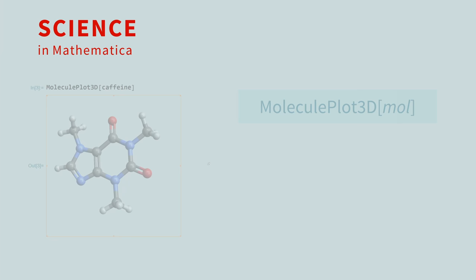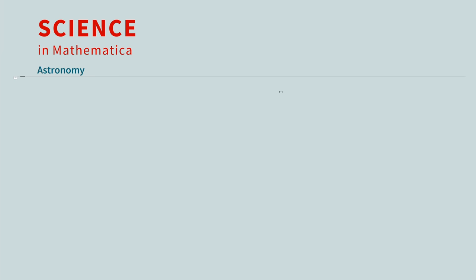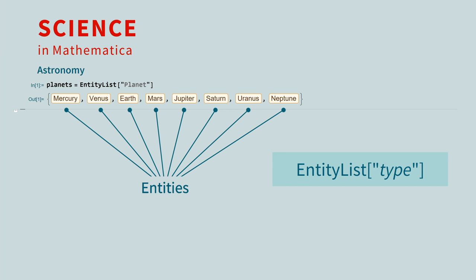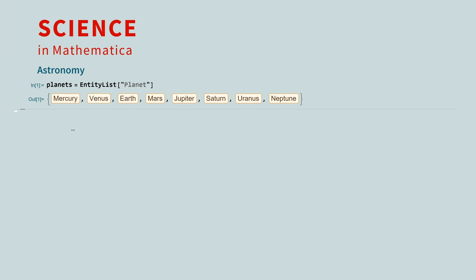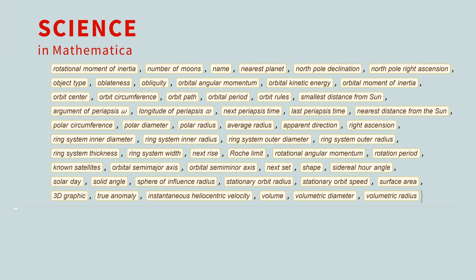You can compute with entities from all branches of science. For example, let's request a list of all the planets in our solar system by calling the EntityList function for the entity type planet. These rounded rectangles are Mathematica's way to display entities. For programmers, you can think of entities as objects. These entities have a wide variety of properties associated with them. You can see what data is available by using the EntityProperties function. Here are the properties available for each planet.